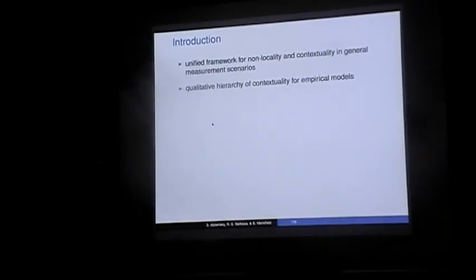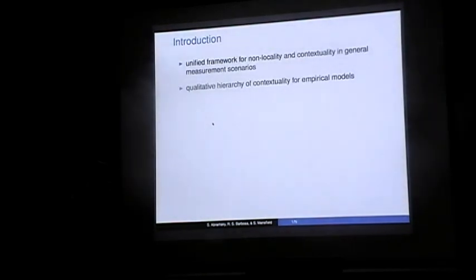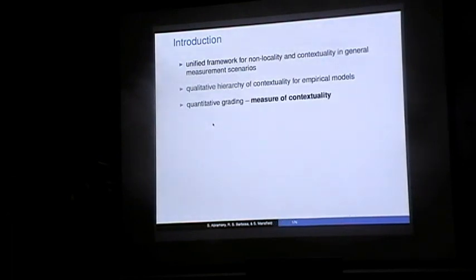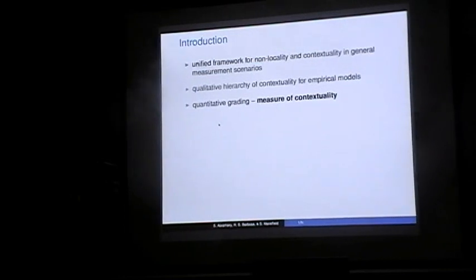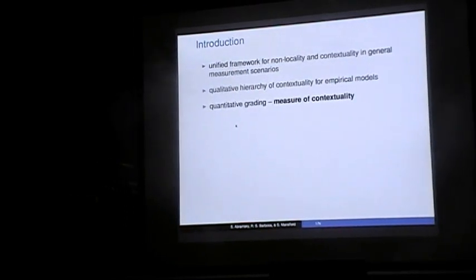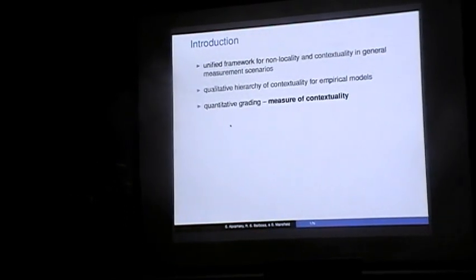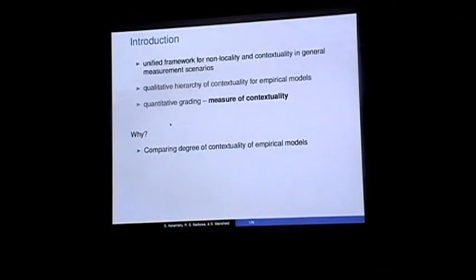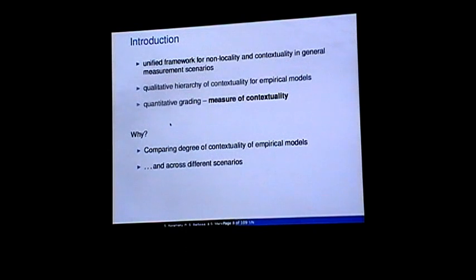Kohei talked about it in his tutorial two days ago — it's about strong contextuality, logical contextuality, and promising contextuality. The idea of this talk is to have a quantitative gradient to this and introduce some sort of measure of contextuality. The reason it would be interesting is that we'd like to compare the degree of contextuality of several different models and across different scenarios, not just for one scenario.